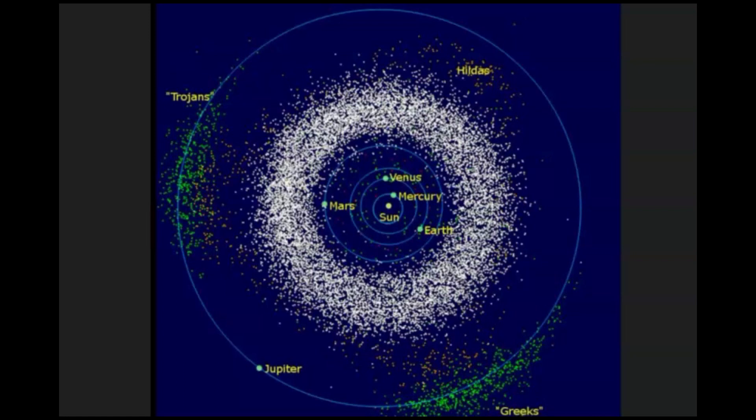This asteroid is traveling at 82,234 kilometers per hour and at a distance of 2.3 million kilometers from the Earth. So that would be outside the area beyond the moon.